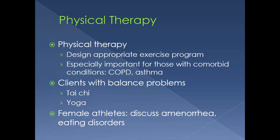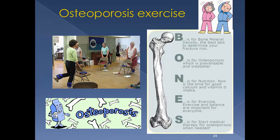For physical therapy, the nurse is going to collaborate with a physical therapist to help design appropriate exercise programs. This is especially important for those with comorbid conditions that limit exercise, like COPD and asthma. Clients that have balance problems may benefit from Tai Chi or yoga, and both benefit people with osteoporosis. If working with female athletes, they need to discuss amenorrhea and eating disorders, counseling, and nutrition referrals.